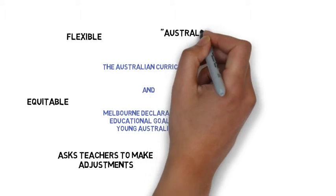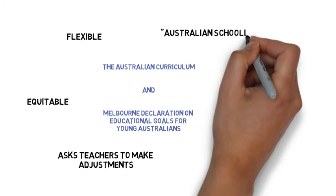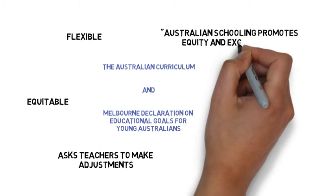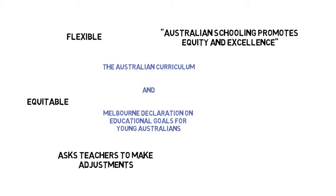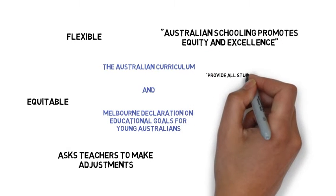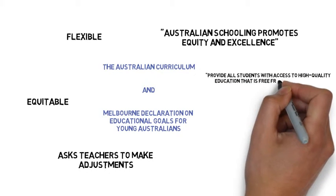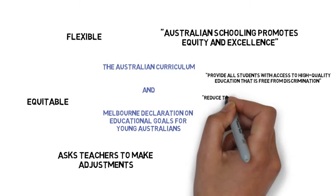Similarly, the Melbourne Declaration has specific goals. Goal 1 states Australian schooling promotes equity and excellence. This means all schools must provide all students with access to high-quality education that is free from discrimination.